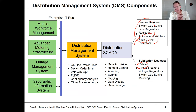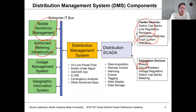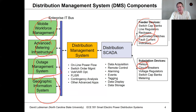Some auxiliary applications include mobile workforce management — communications with crews, work orders, and dispatch. You have advanced metering infrastructure, where smart meters can communicate information like whether customers have power. You have a geographic information system — a mapping system with all the detail about your circuit. And the outage management system, which helps you manage crews and resources to get customers back into service.